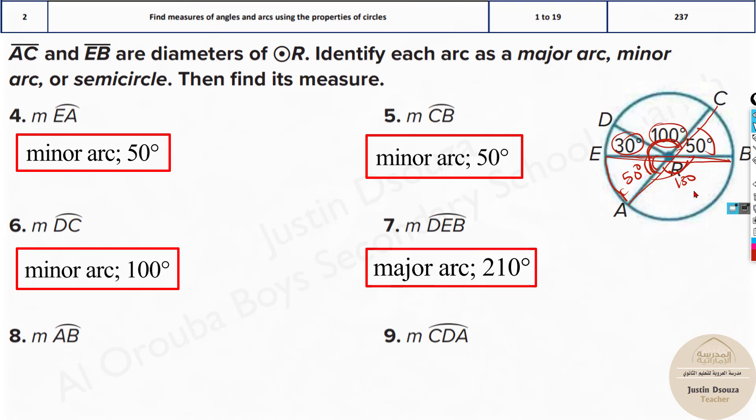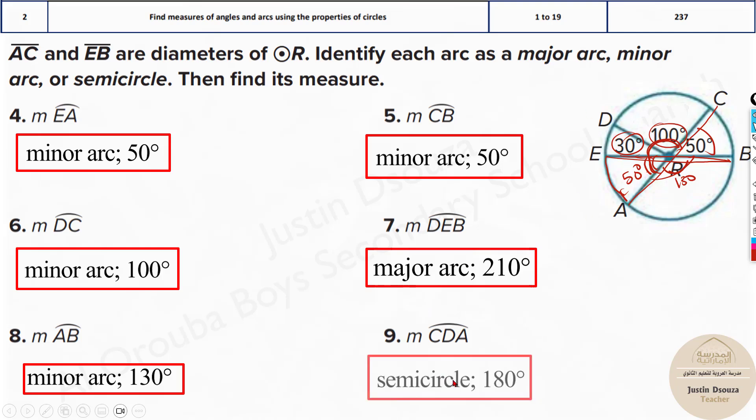So AB would be the shorter distance so it is a minor arc itself, 130. And CDA, that would be semicircle 180 degrees. So that's the answers.